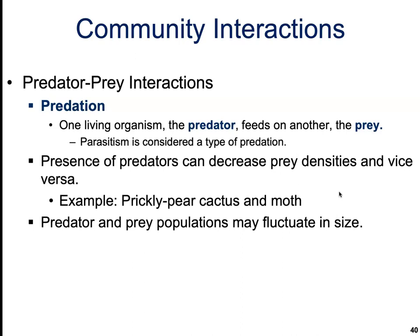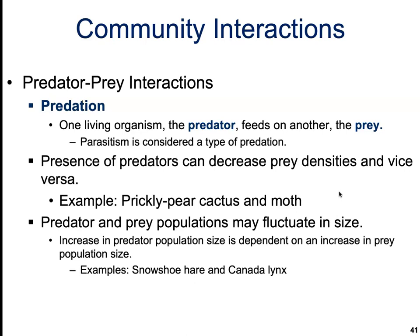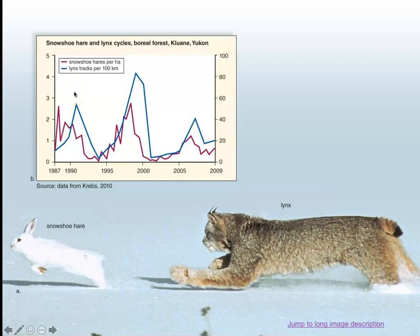Predator-prey populations can fluctuate in size. Increase in the predator population size is dependent on an increase in the prey population size. Rather than a steady rate, a series of peaks and valleys can result from the predator population lagging slightly behind that of the prey. A classic example is the snowshoe hare and Canadian lynx, whose populations cycle. The snowshoe hare is a common herbivore in the coniferous forests of North America, feeding on twigs of various shrubs and small trees.